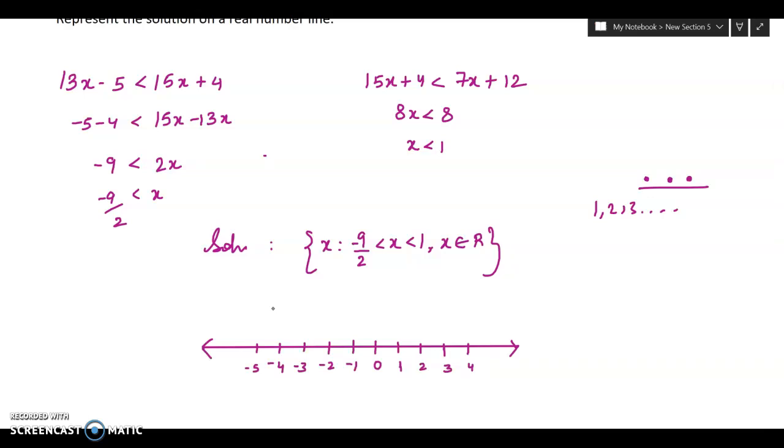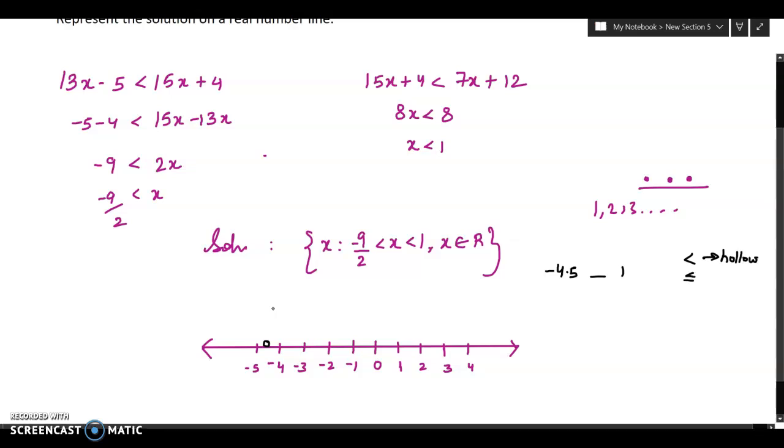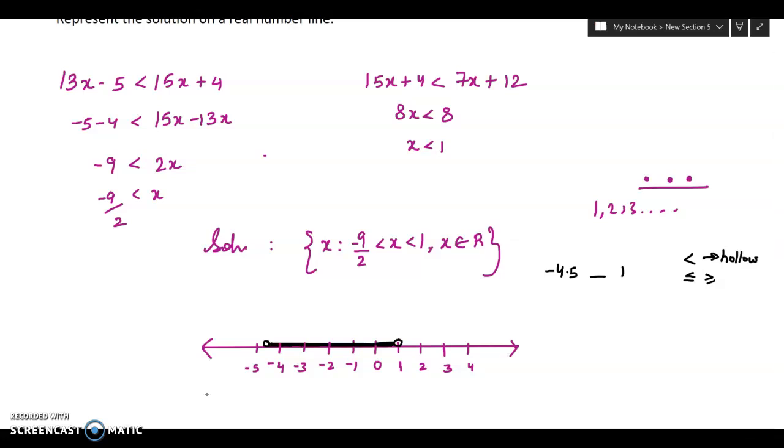Now the value of x is in between minus 4.5 and 1. Minus 4.5 is here. We have to make a hollow circle because there is a less than sign. A filled circle will be drawn when it is less than equal to or greater than equal to. And less than 1, a hollow circle again. And this is the solution set, the values in between minus 4.5 and 1.